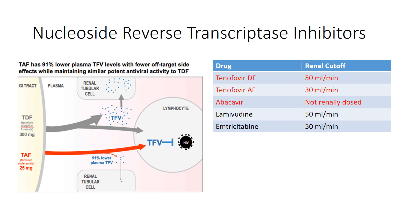Tenofovir alafenamide is a more efficient prodrug that delivers tenofovir inside the cell where it's active against HIV. With tenofovir disoproxil fumarate, much of the tenofovir remains outside the cell and gets taken up by bone and kidneys, causing toxicity. With tenofovir alafenamide, a lower dose is used because more reaches the cell, leaving less in plasma to impact bone or kidneys. Key renal cutoffs: tenofovir DF requires dose adjustment at approximately 50 mL/min; tenofovir AF can be used down to about 30 mL/min; abacavir requires no renal dose adjustment.